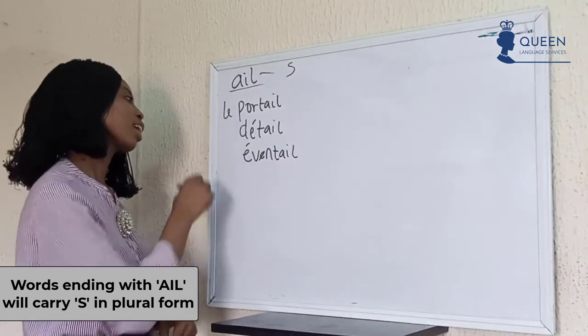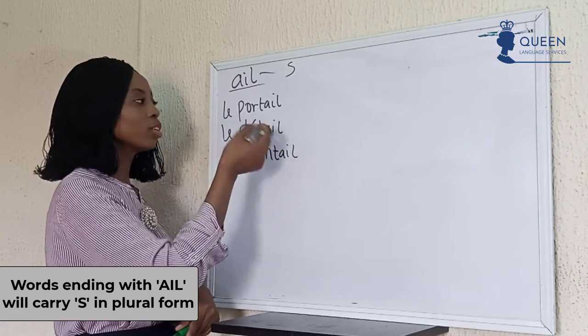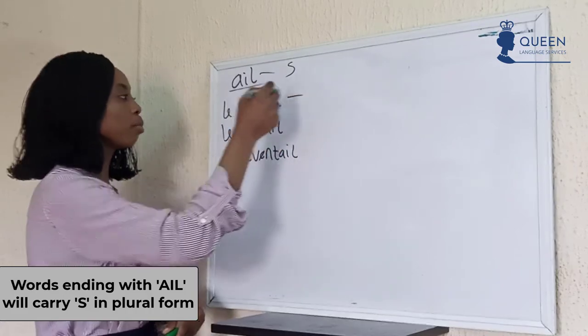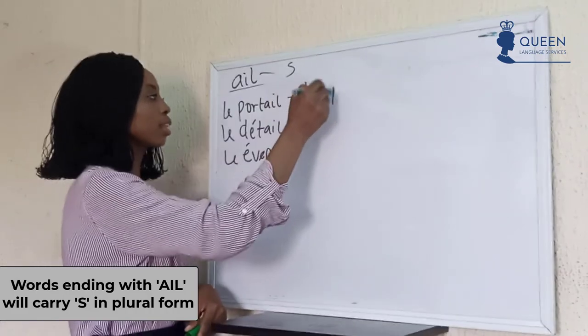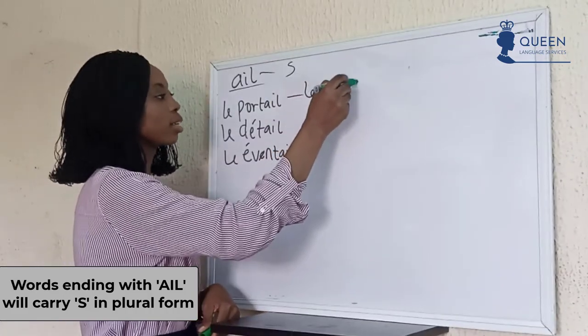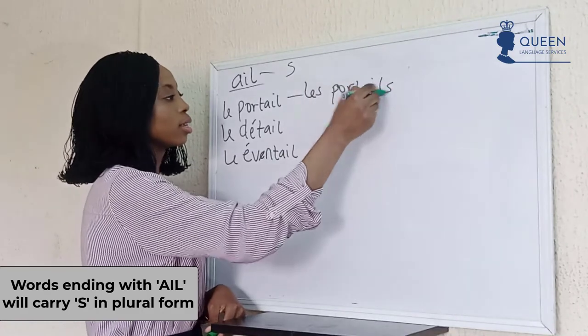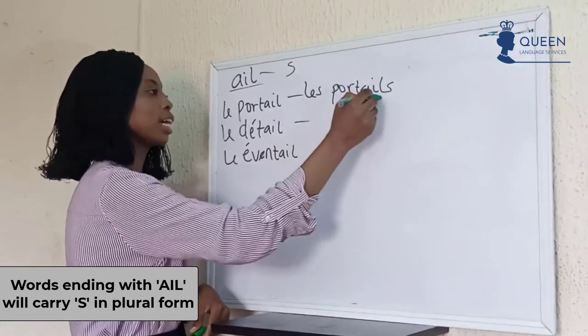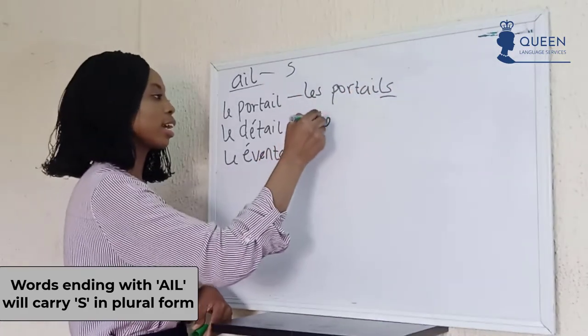For -ail words, the plural form gives us '-ails' or '-aux.' For example, 'le portail' → 'les portails,' 'le détail' → 'les détails,' following the pattern.